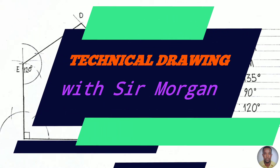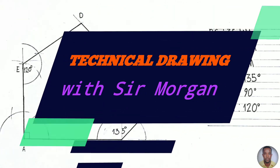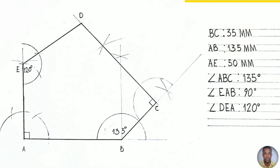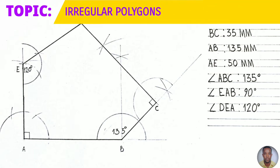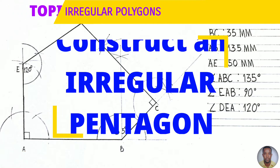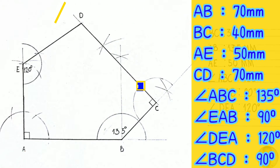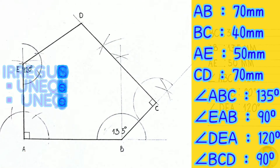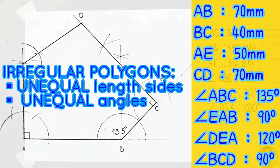Greetings everyone. Sir Morgan here from the technical department. From the topic irregular polygons, you'll be constructing an irregular pentagon today to the given dimensions on the right. Irregular polygons are those with unequal length of sides and unequal angles.